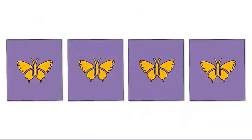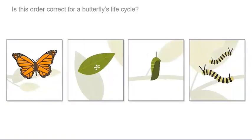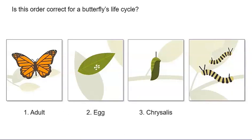Let's play a quick game. I have four cards. When I flip them over, you will see the different stages of the butterfly life cycle. You tell me if I have them in the correct order. Okay, here we go. Is this order correct for a butterfly's life cycle? Adult, egg, chrysalis, then caterpillar? No, this order doesn't look right.